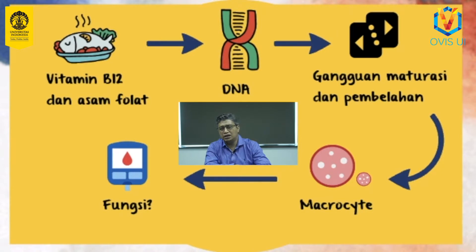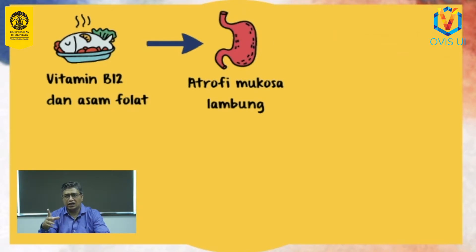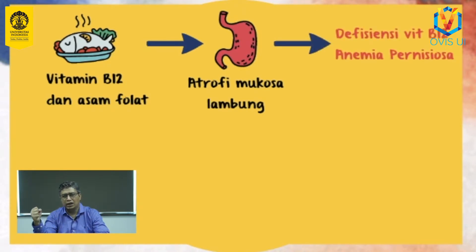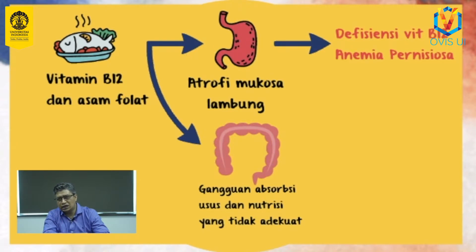Secara fungsi, sel darah merah ini tetap dapat mengangkut oksigen seperti sel darah merah normal. Hanya saja sel ini memiliki durasi hidup yang lebih singkat, yaitu setengah sampai sepertiga durasi hidup sel darah merah normal. Defisiensi vitamin B12 terjadi karena adanya atrofi mukosa lambung yang berakibat abnormalitas dalam proses penyerapan vitamin ini di usus halus, sehingga menyebabkan anemia yang disebut sebagai anemia pernisiosa. Sementara itu, defisiensi asam folat seringkali terjadi bersamaan dengan defisiensi vitamin B12 karena keduanya sama-sama terganggu absorpsi di usus.